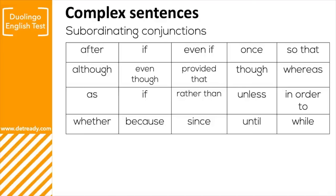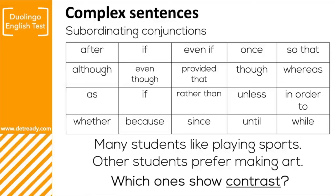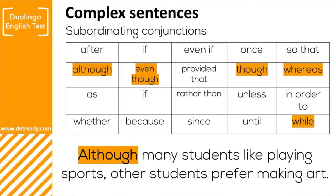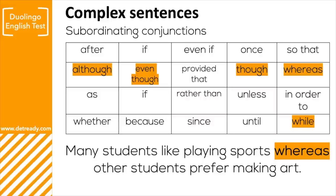For example, take these two simple sentences: 'Many students like playing sports' and 'Other students prefer making art.' These two ideas show a contrast, so you use a contrasting subordinating conjunction to link them. For example: 'Although many students like playing sports, other students prefer making art.' The subordinating conjunction is 'although' and it shows contrast. Notice that when you use a subordinating conjunction at the start of your sentence, you need a comma before the second idea. You could also put it in the middle: 'Many students like playing sports whereas other students prefer making art' — in this case no comma is needed.